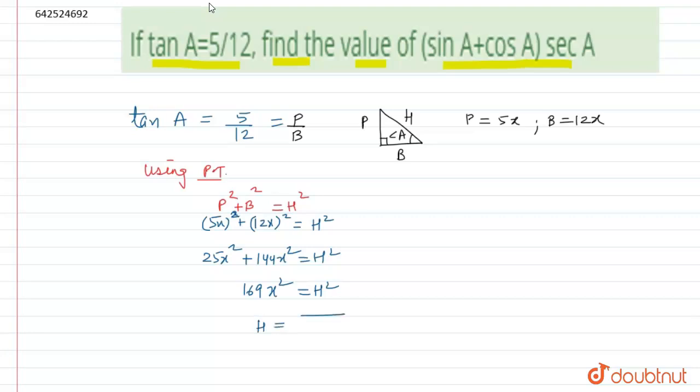So this will give us 169x square equals to H square. Now we can take the square root of H on the left-hand side, and this will be converted into root 169x square. So H value will be equal to 13x. So we have now found the value of hypotenuse.